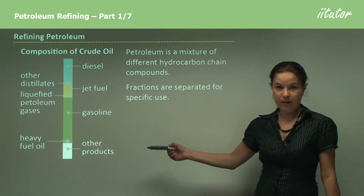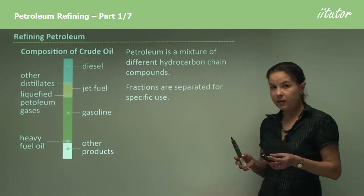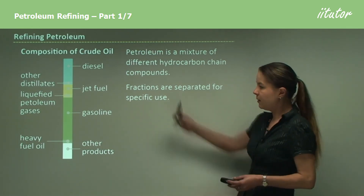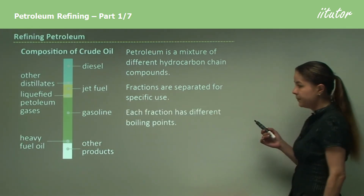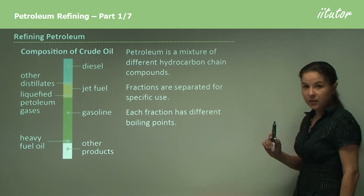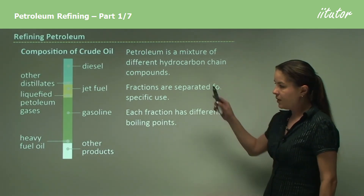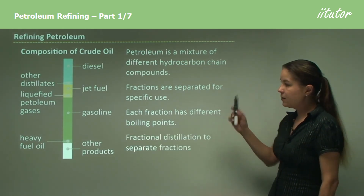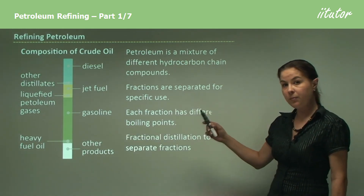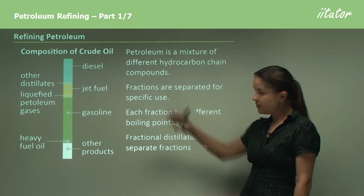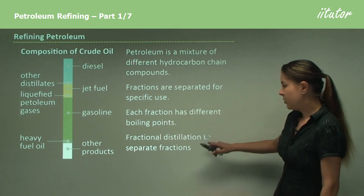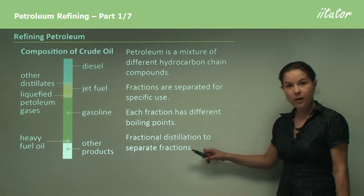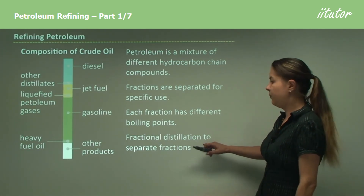We have to separate these for their uses. We get the petroleum, but we can't just use petroleum and put it in a car — it doesn't work like that. We need to separate them for specific uses. Each fraction has different boiling points, and it's this physical property of different boiling points that we utilize to separate the different fractions. To do that, we use something called fractional distillation, and this is quite an important part of this topic for you to learn.